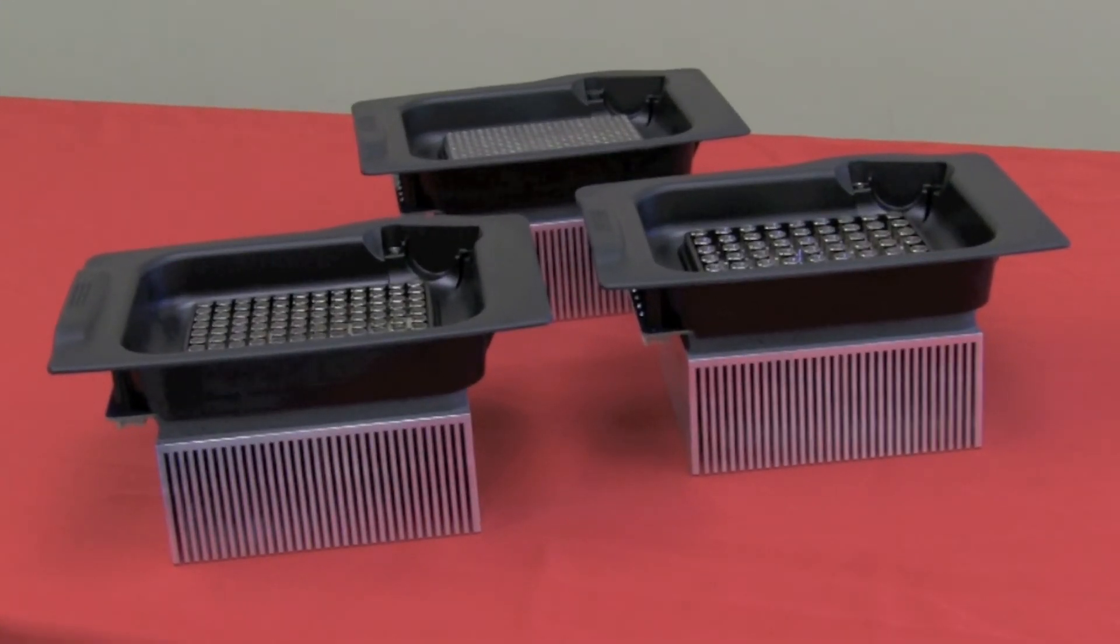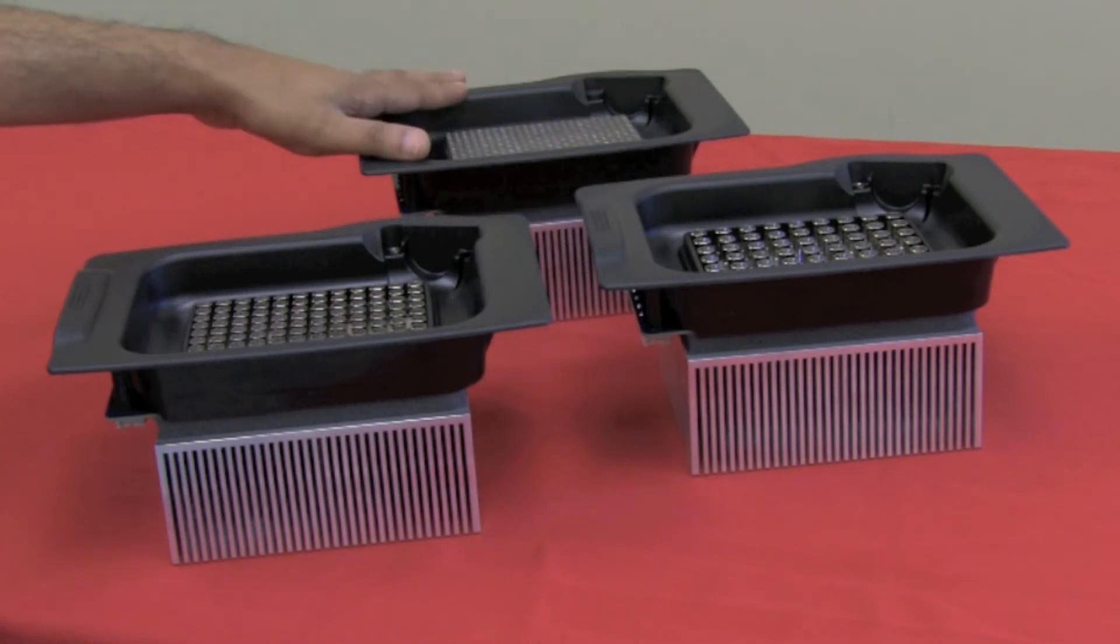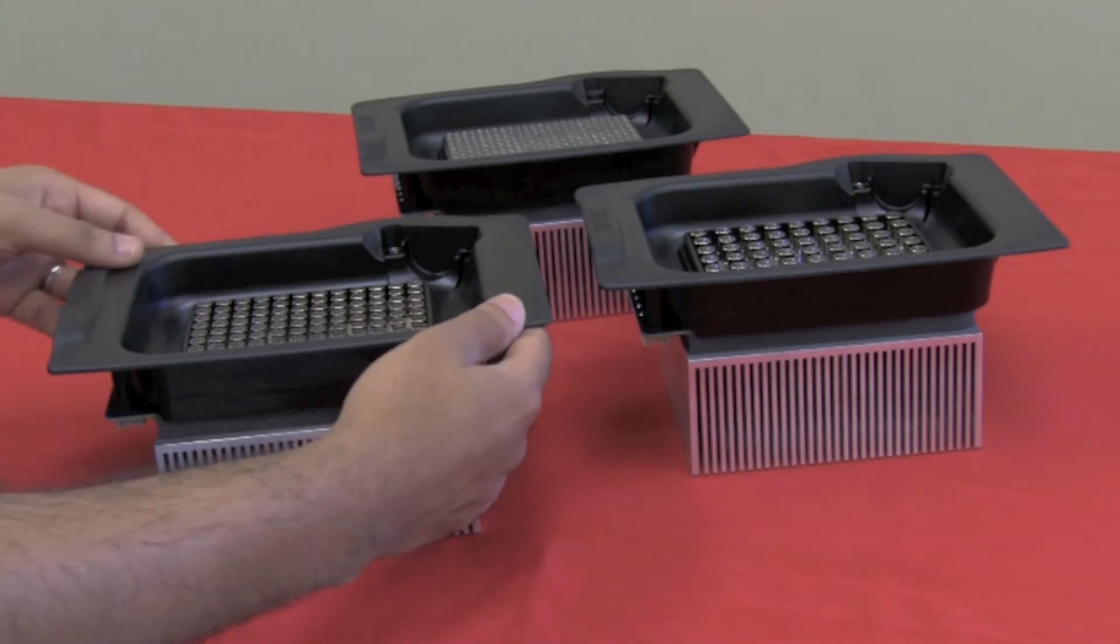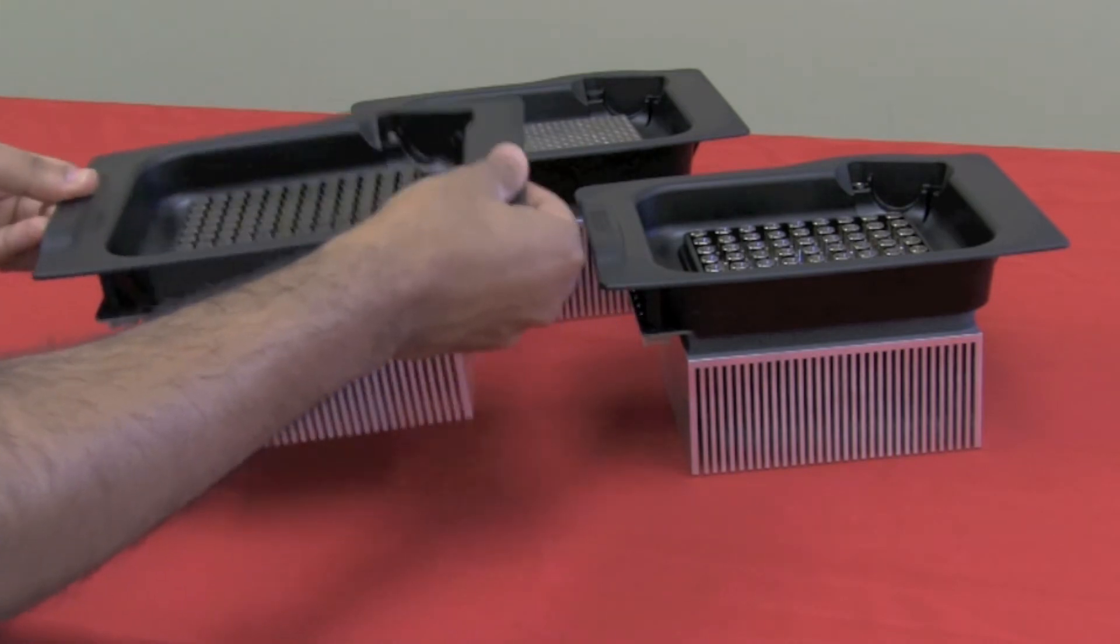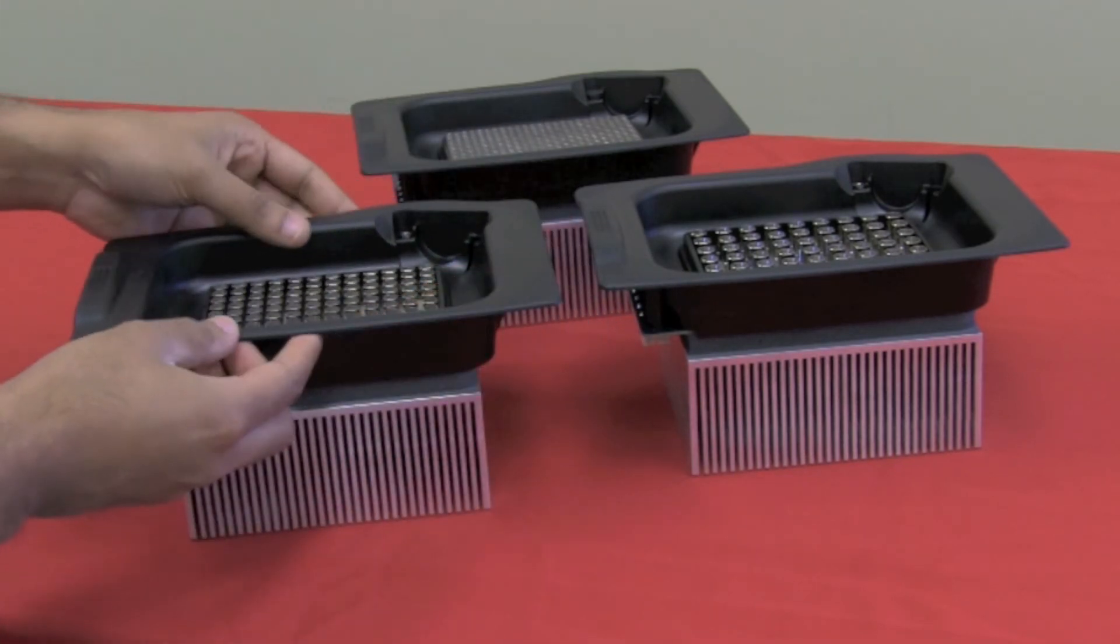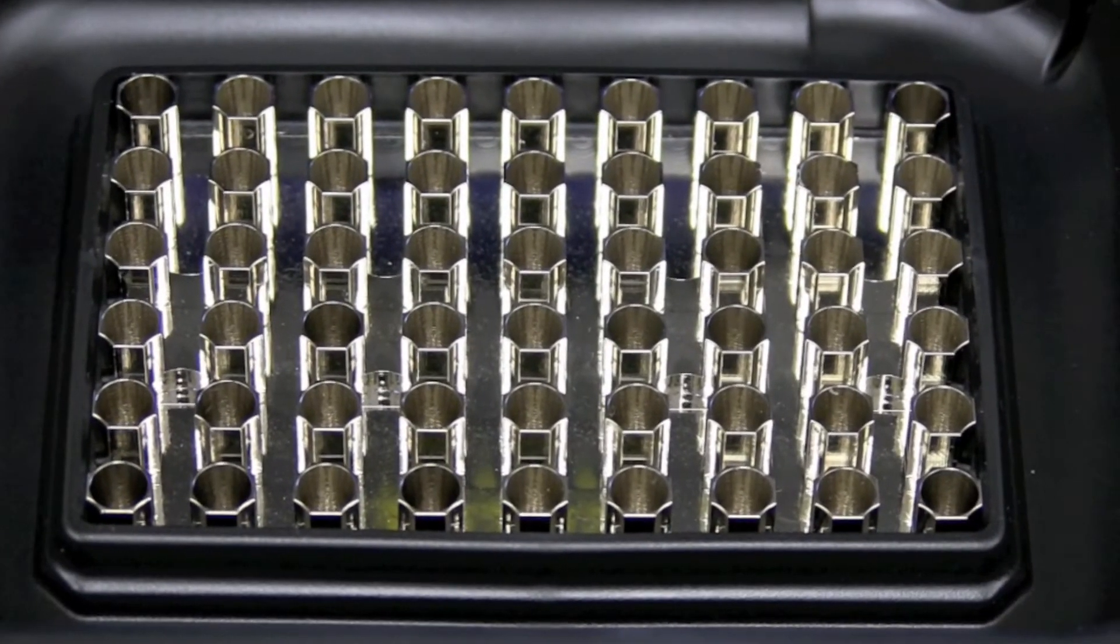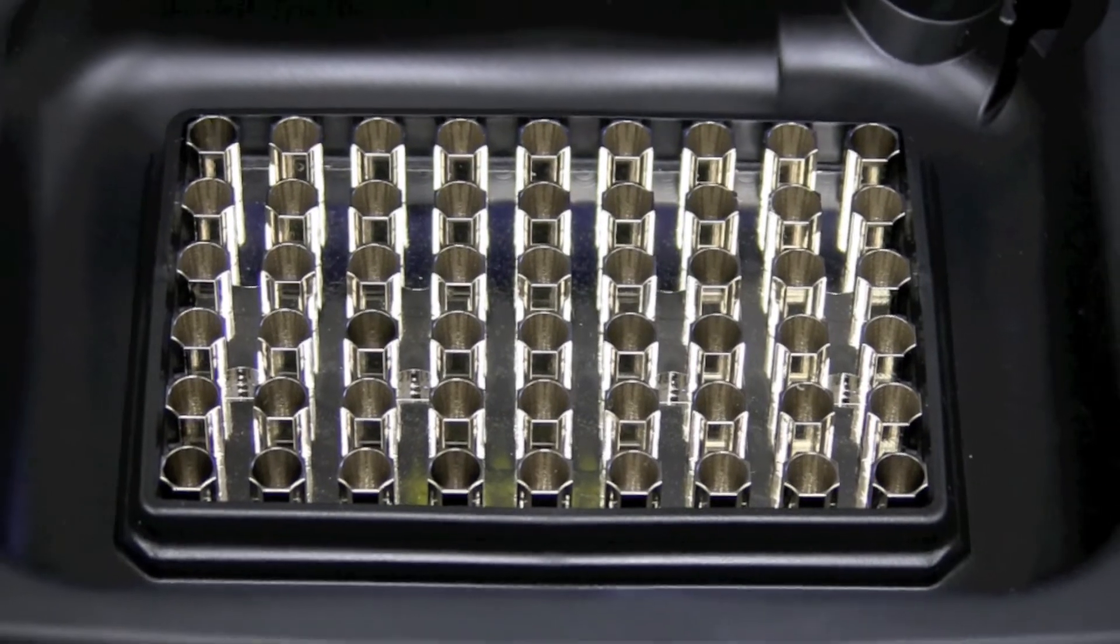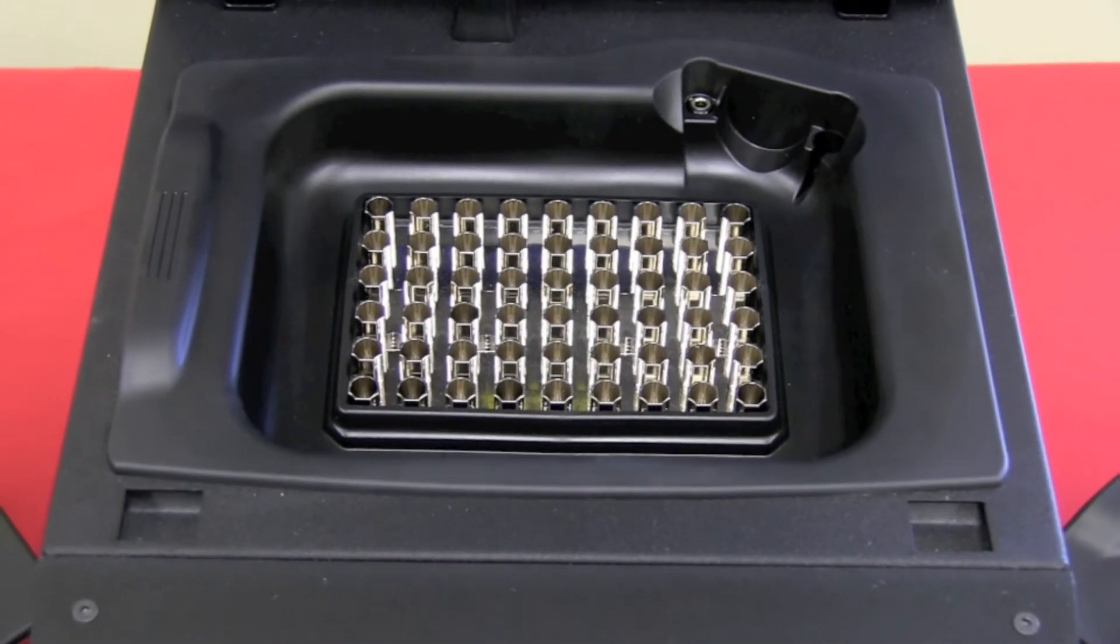So here we have the three options for the blocks that are available with the Series 6. We have the 96-well block here, the 56-well block here, and the 384-block here. All of them are very similar. We've got the wells at the front, the plastic grips for easily removing the blocks, and also this large heatsink at the front. There is also the option for an in-situ flat block, which can hold up to four slides at any one given time. This is not pictured in the video, but we also have this available.